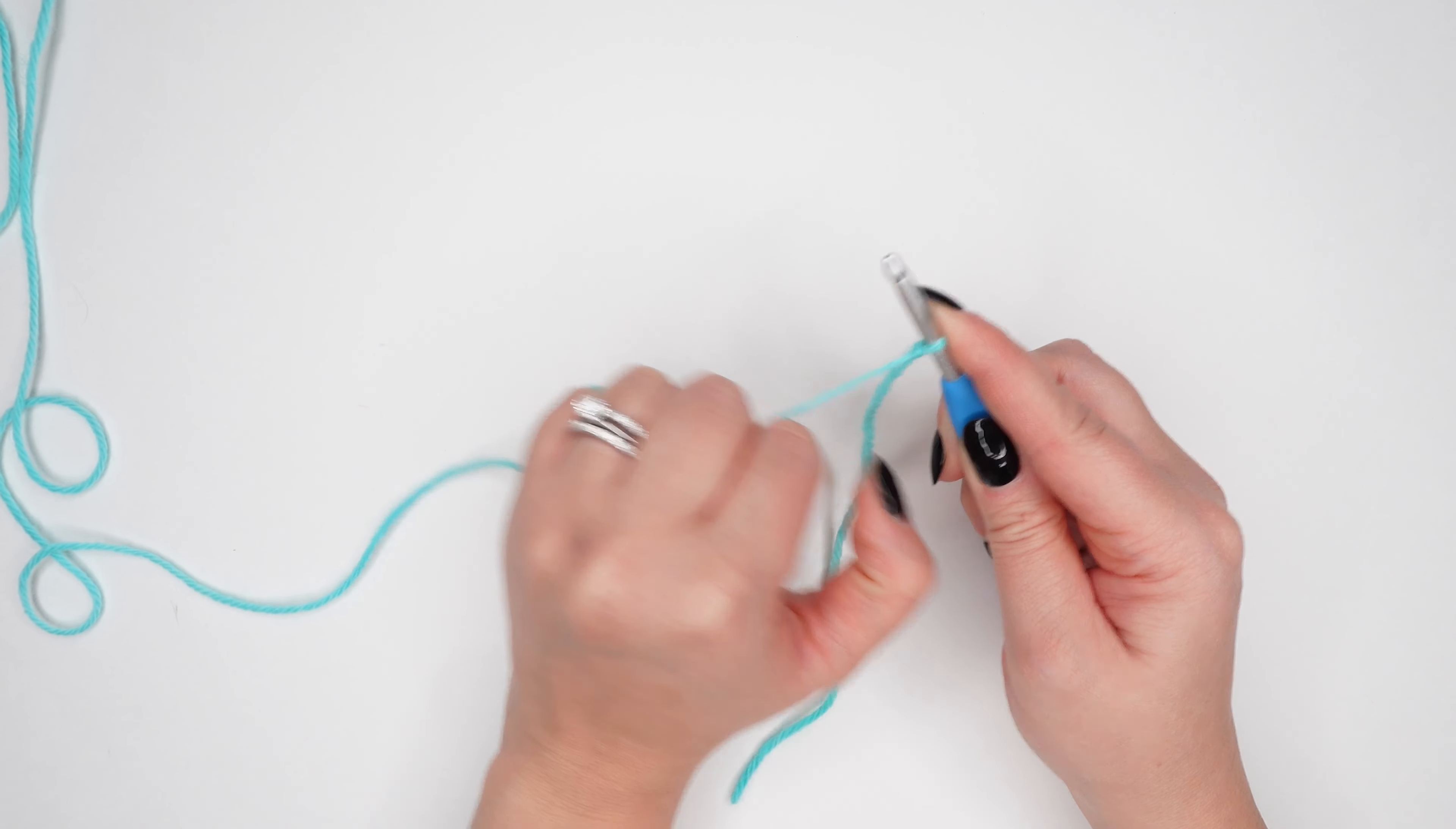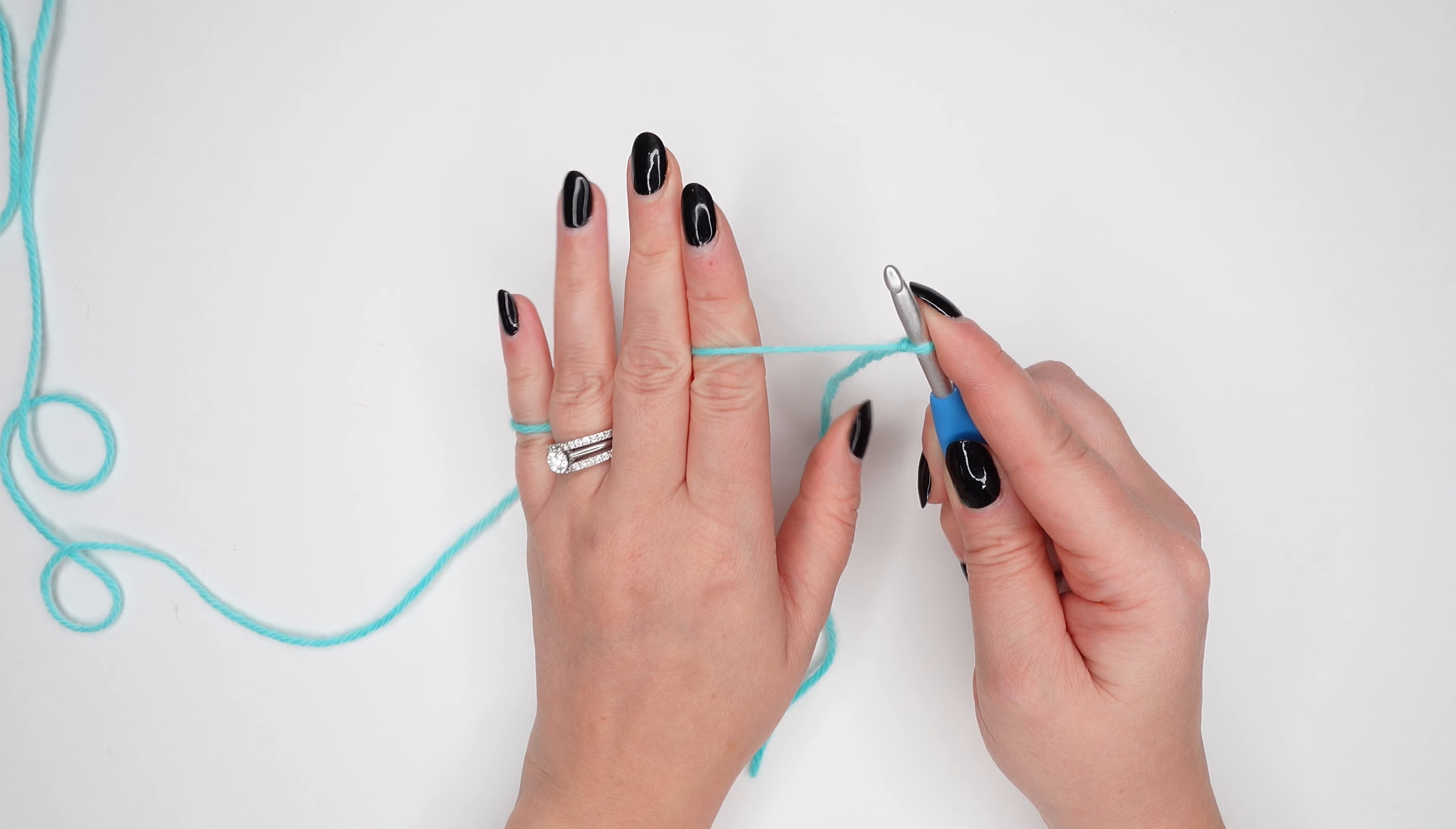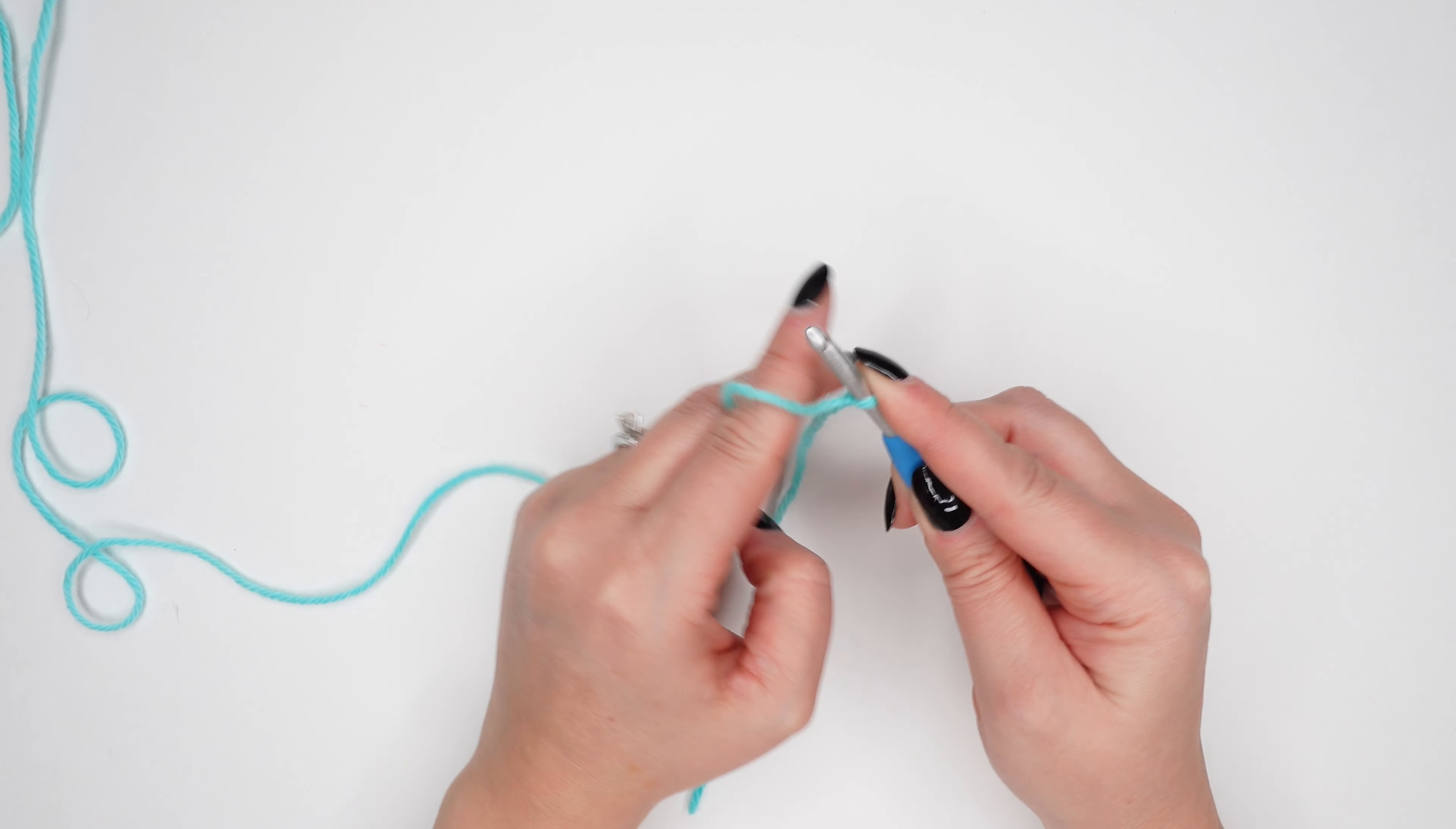Give a couple of tugs and pull on the tail to get comfortable with the yarn in your hands. You don't want to be too loosey-goosey, but you don't want to have a death grip. Just a comfortably firm hold.